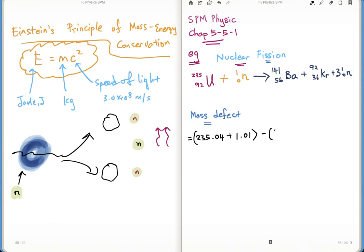Barium is 140.91 AMU, plus 91.93, plus 3 times 1.01 in square brackets. The unit therefore turns out to be 0.18 AMU.